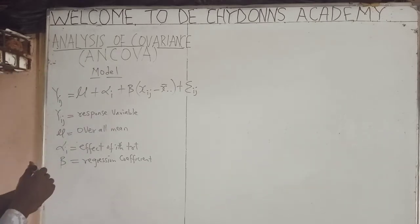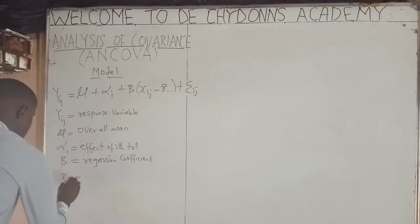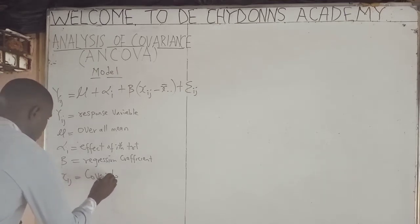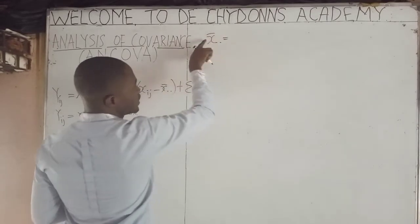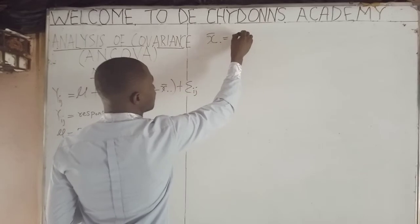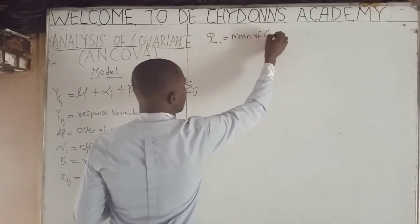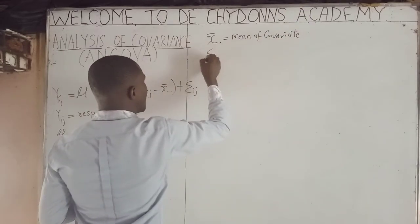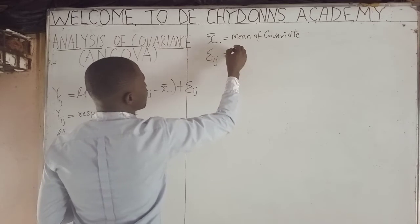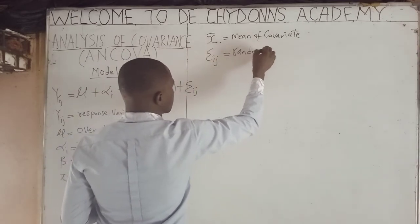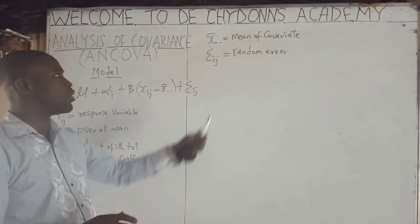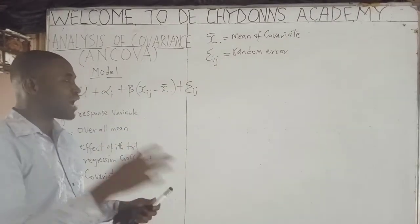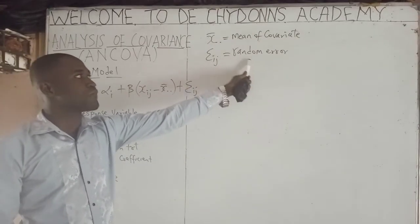S-I-J is called the covariate. The X with a bar on top means the mean of the covariate. The random error term accounts for the fact that in every data analysis you must take cognizance of error — to take care of that error, we include the random error term.